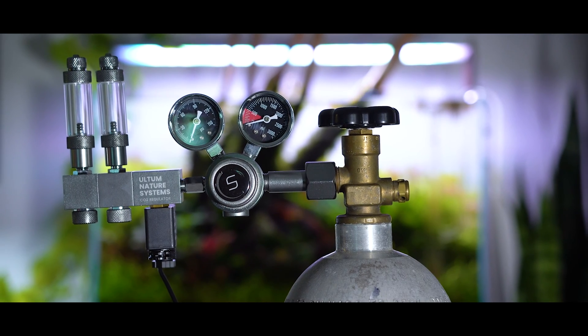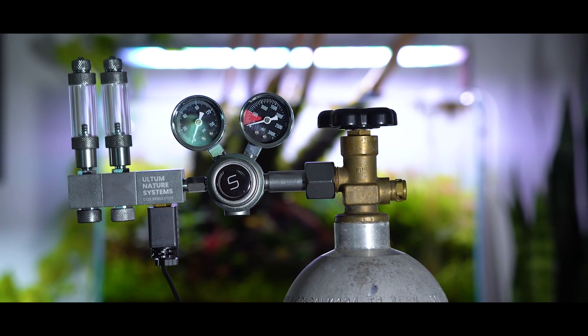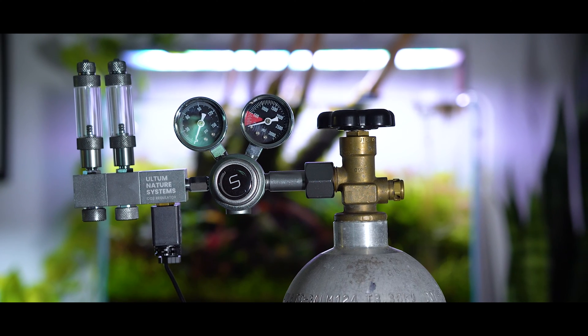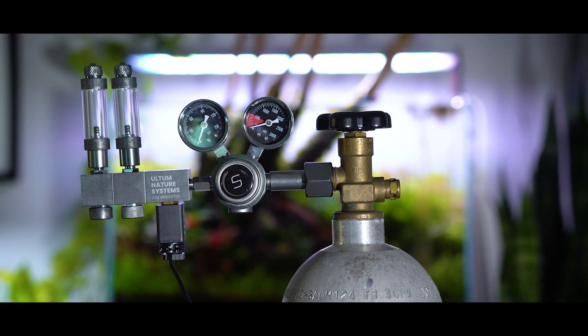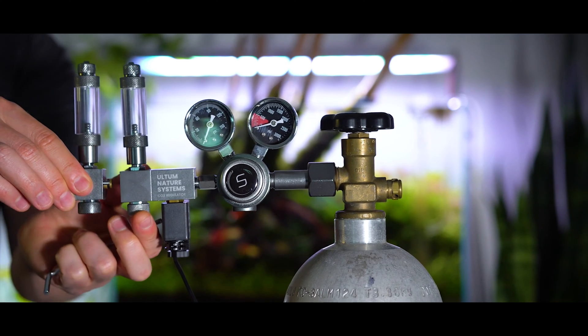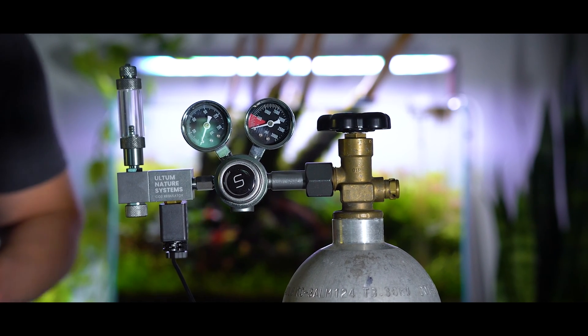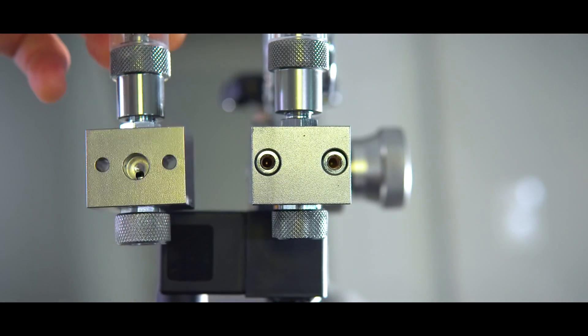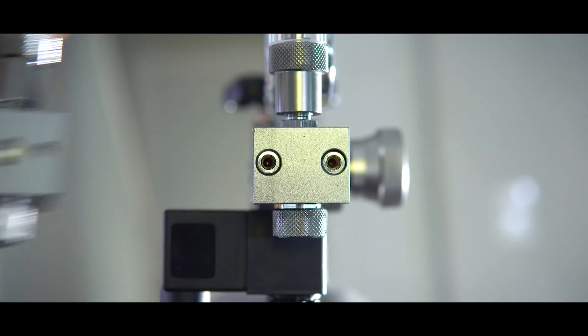Now for step three, we're going to customize our bubble counter manifold. This can vary a little bit depending on how you want to set up your CO2 system. For example, if you want to supply multiple aquariums with a single CO2 tank and regulator, you can actually add different manifold blocks with their respective bubble counters onto this regulator. Today I'm just going to be using one because I'll only be supplying a single tank with CO2.